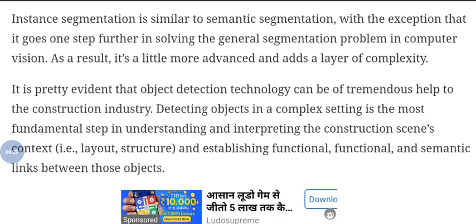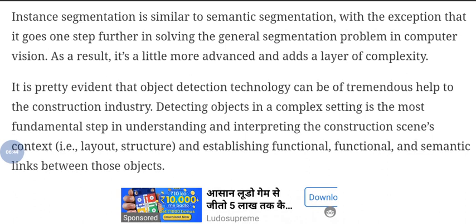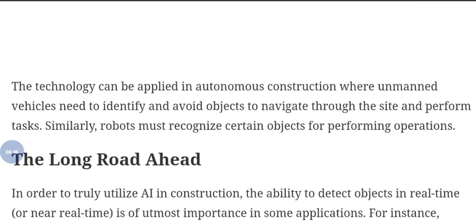It is evident that object detection technology can be a tremendous help to the construction industry. Detecting objects in a complex setting is a fundamental step in understanding and interpreting the construction context — that is, the layout, structure, and semantic links between objects. The technology can be applied in autonomous construction, where unmanned vehicles need to identify objects to navigate the site and perform tasks, and robots must recognize certain objects for performing operations.